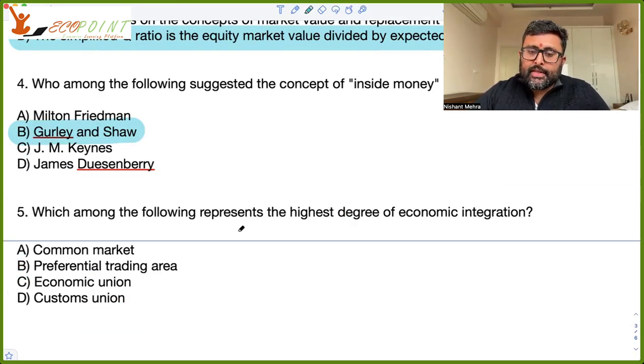Which of the following represents the highest degree of economic integration. So one is preferential trading area. So here what happens is countries, they reduce tariffs on certain products but they do not eliminate it completely. Then you have free trade area. All trade barriers among the member countries, they are removed. But each country maintains its own external trade policy. Then you have customs union. So among the member countries, they have free trade. But on the non-member countries, they adopt a common external tariff.